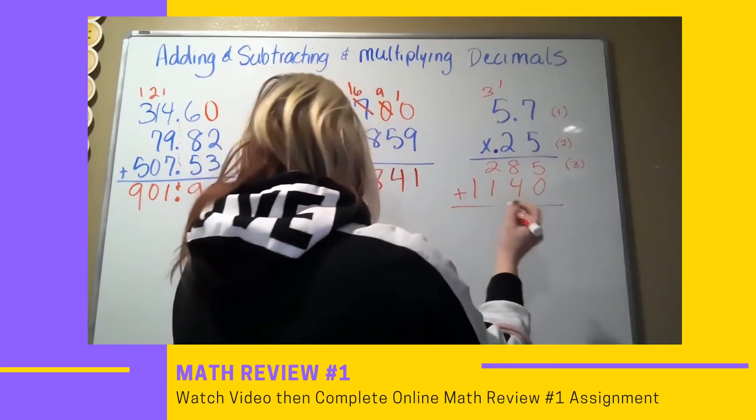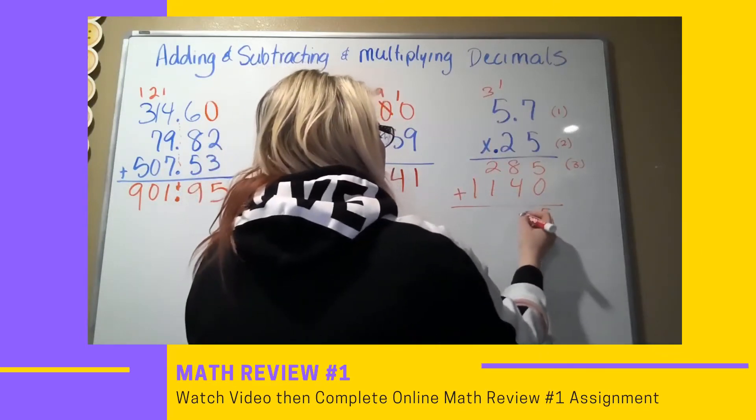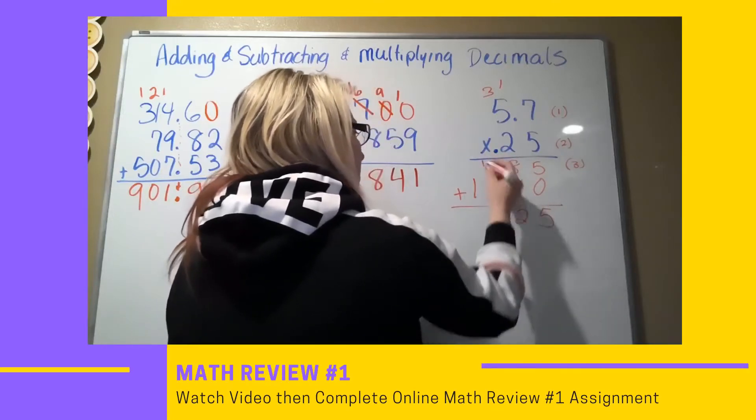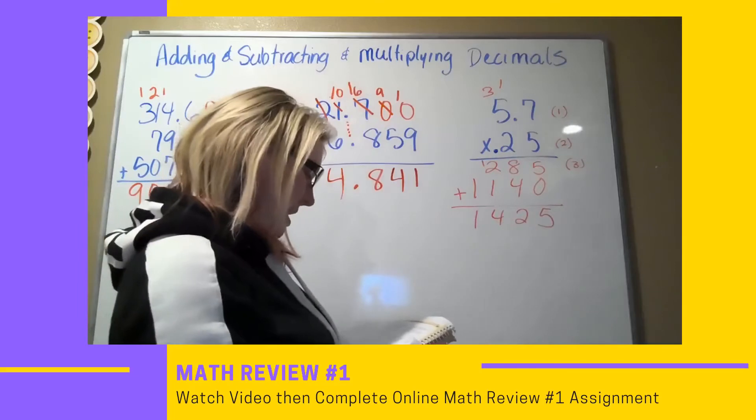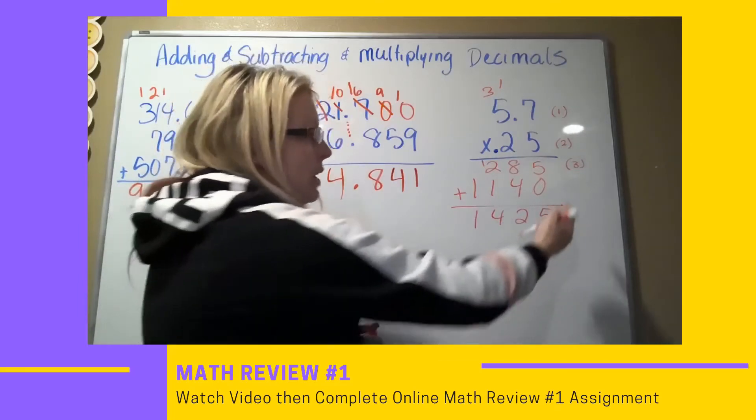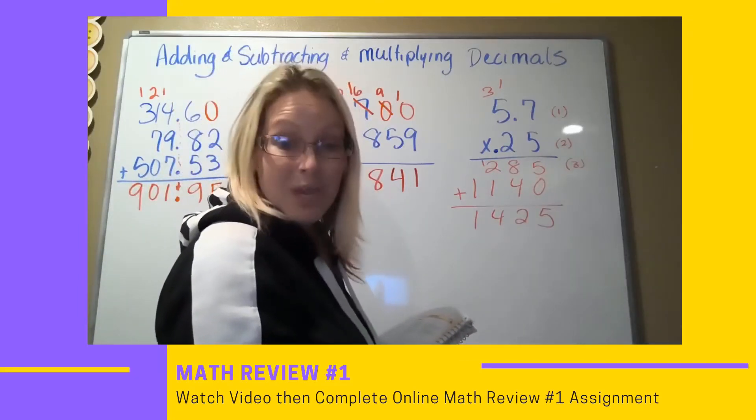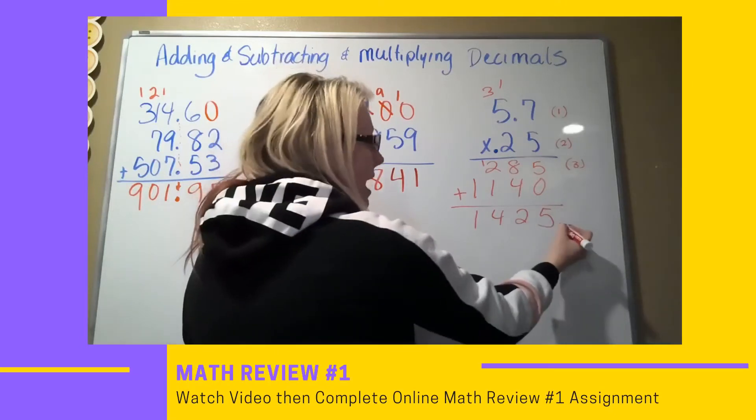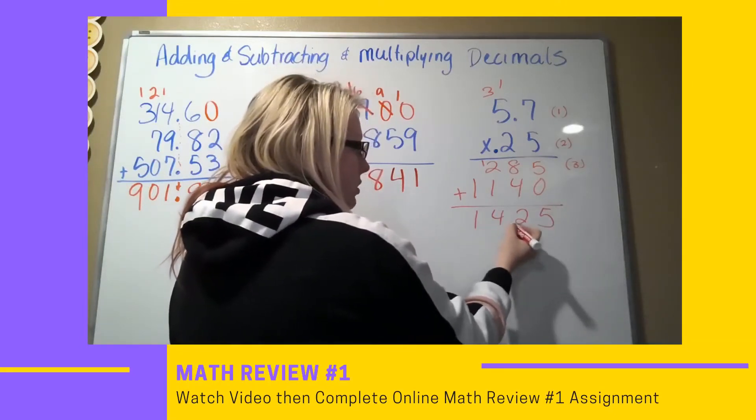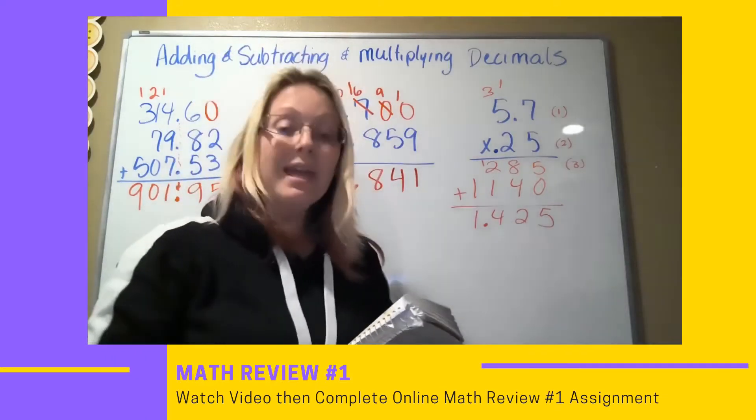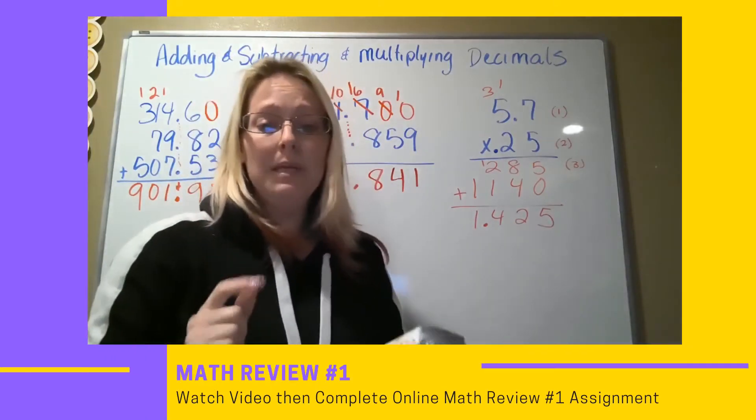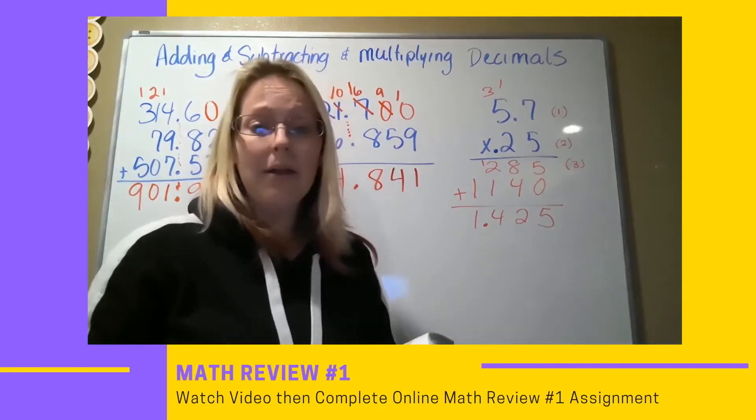I then add it up. 5, 12, 2, 3, 4, and 1. But this is not my final answer. Remember, I have to move my place values over 3 times. So what do I do? I start from here, and I go 1, 2, 3. I put my decimal there, and there's my answer. Don't forget, if you do not put your decimal places in the right place, your whole entire answer is wrong.